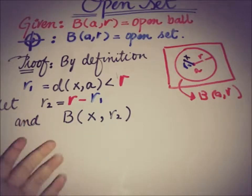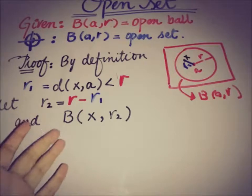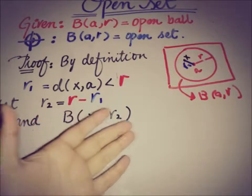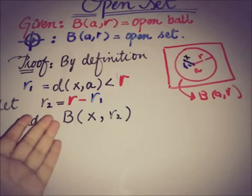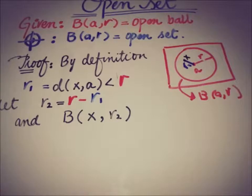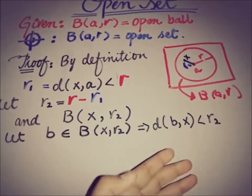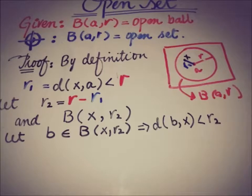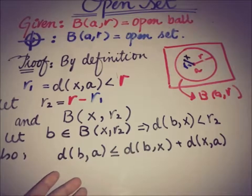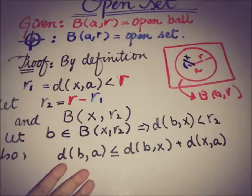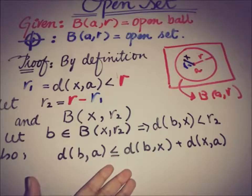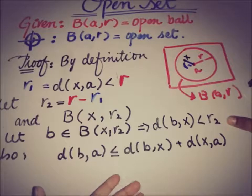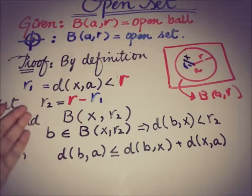Let's take a random point b from the open ball B(x, r2). By definition, d(b, x) < r2. By the triangle inequality — one of the properties of a metric — d(b, a) ≤ d(b, x) + d(x, a). We know d(b, x) < r2 and d(x, a) = r1.